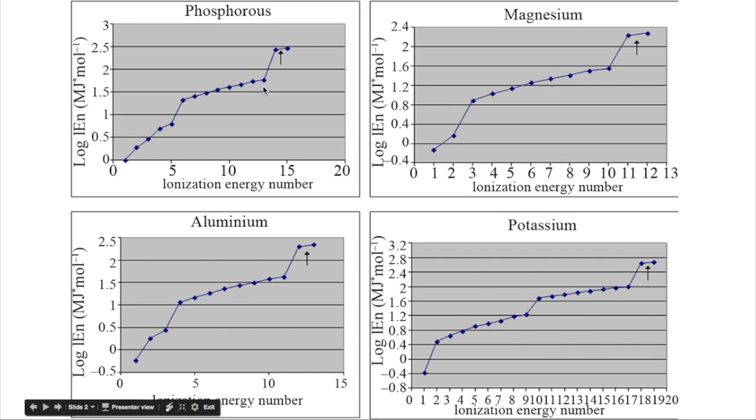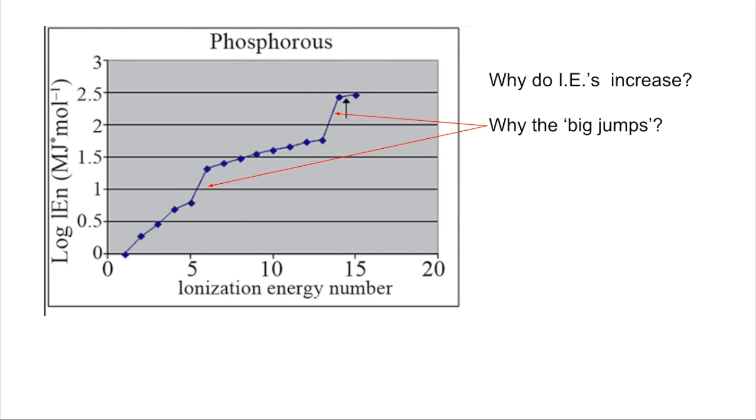So you can see all of the graphs are showing an increase in ionization energy. We'll just use phosphorus to explain the key points. All of the elements you can explain in exactly the same way.